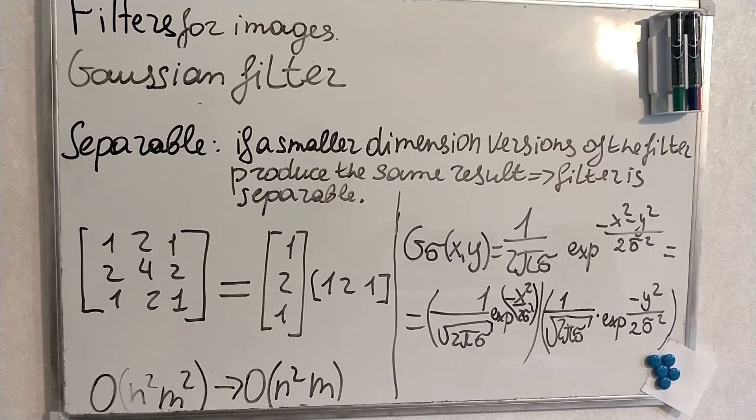And among the disadvantages, Gaussian filter is only good for small values of sigma as it becomes hard to compute. It preserves edges, but still it's not very good at it. And the errors on the boundaries can occur.